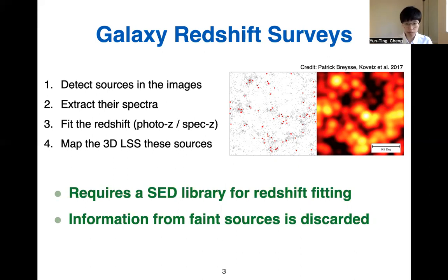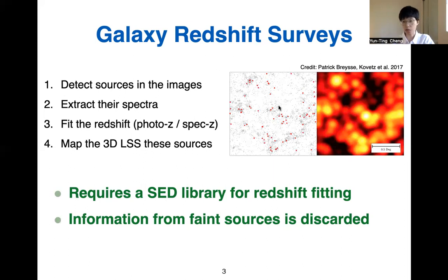However, in this process we need some prior knowledge, like building an SED library to fit the redshift. Also, the raw data coming from the telescope is an intensity map in a few different frequency bands, with emission coming from all sources on the sky. But we only use information from the bright sources, and the information from the fainter populations is totally wasted in this analysis.